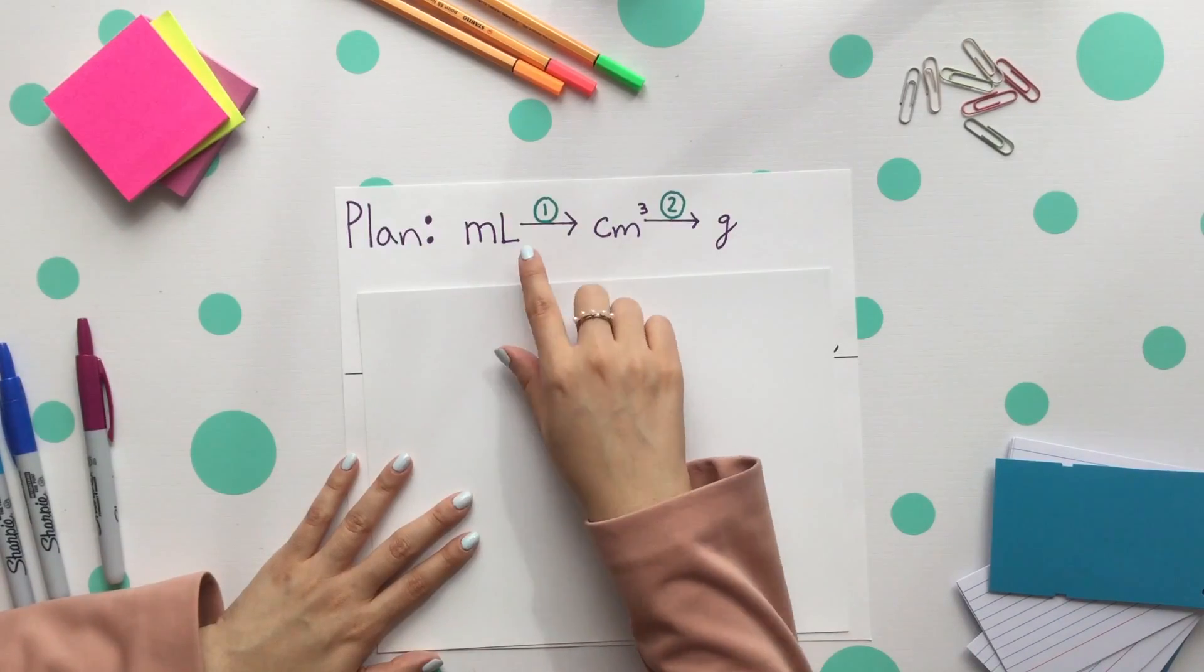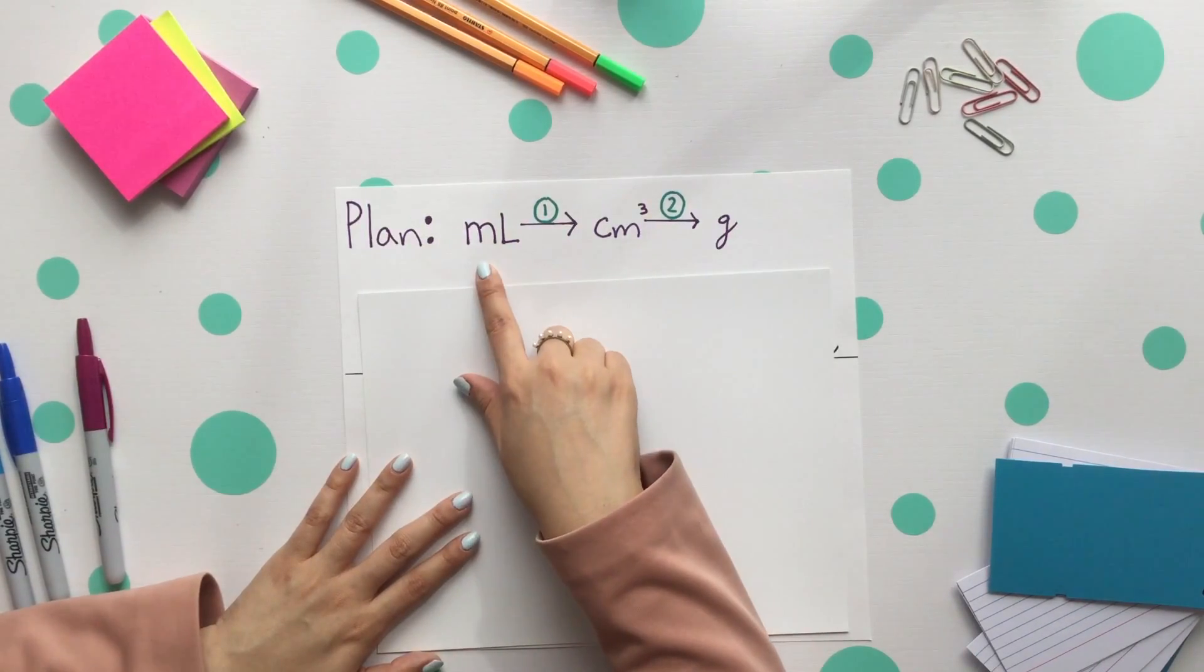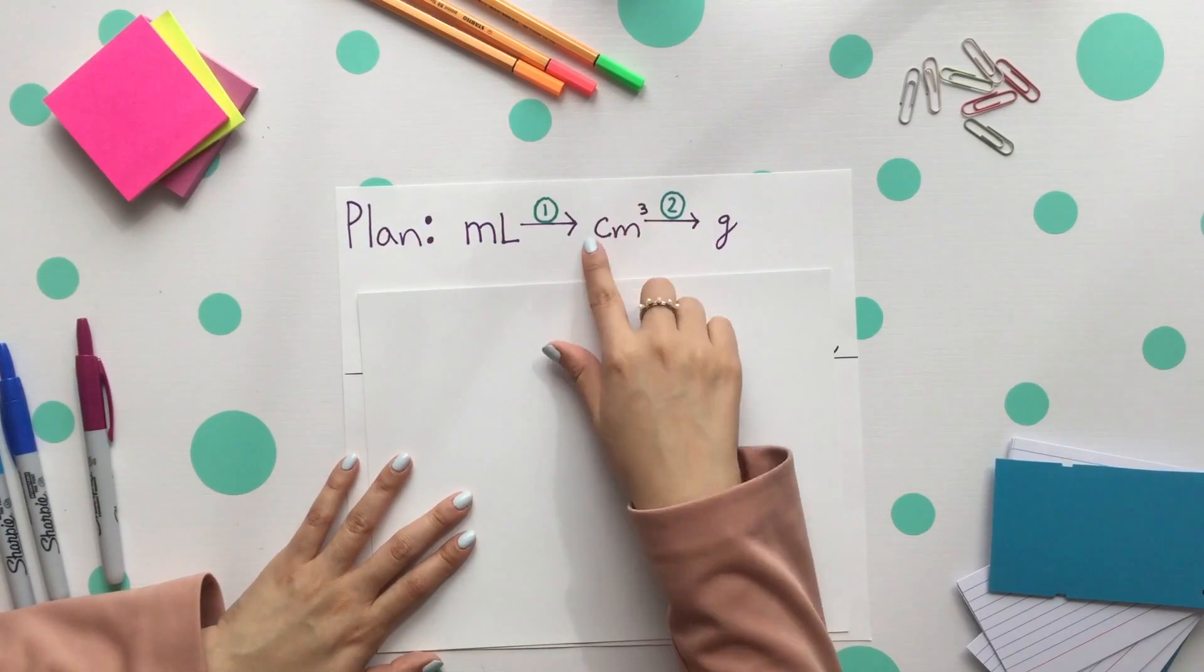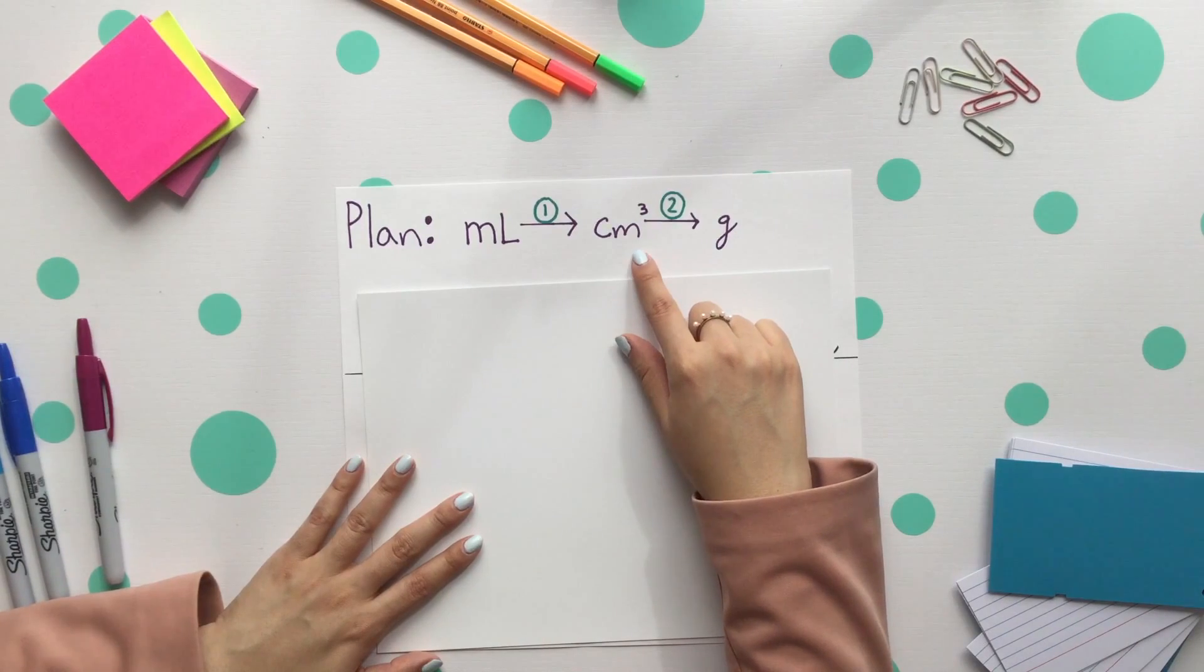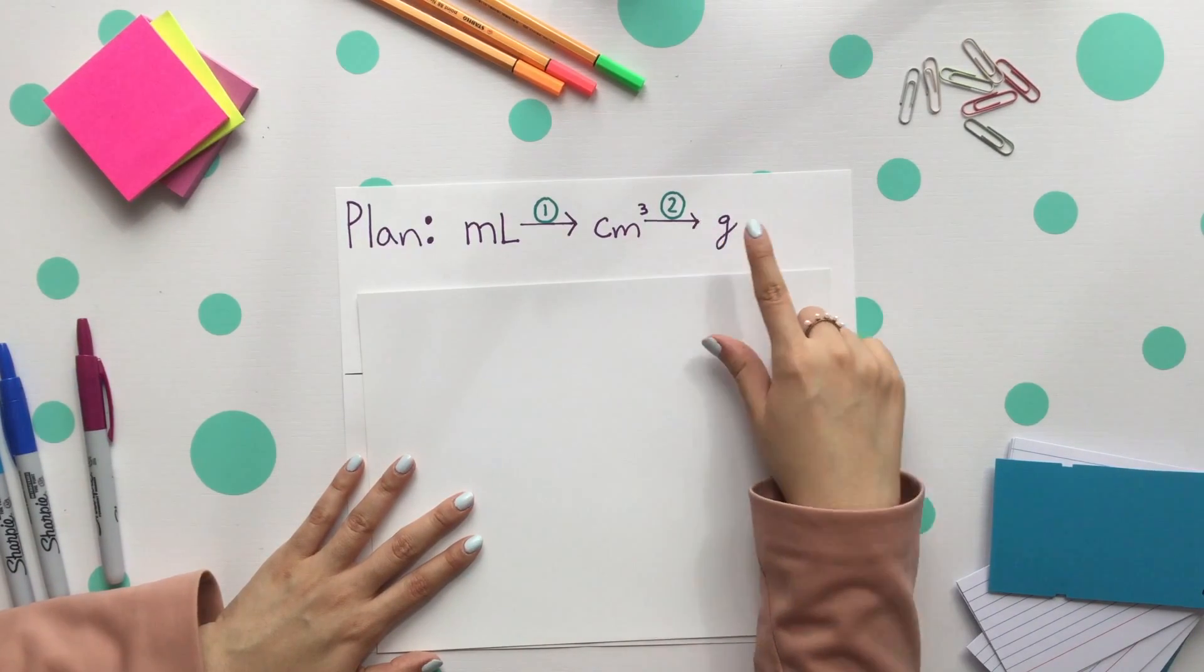The plan is going from our given unit, milliliters, then using our first conversion factor to go to cubic centimeters. Lastly, we'll use our density as our second conversion factor to get to grams.